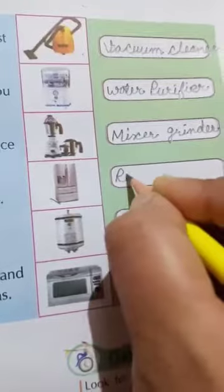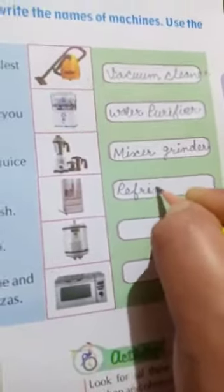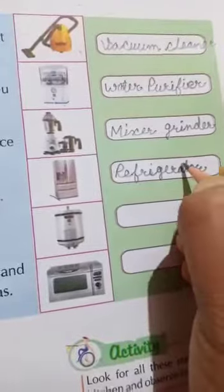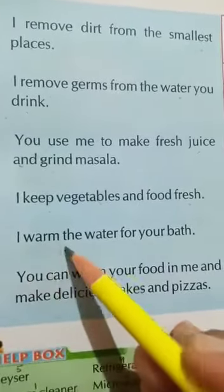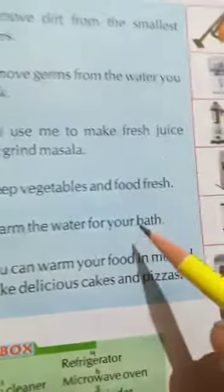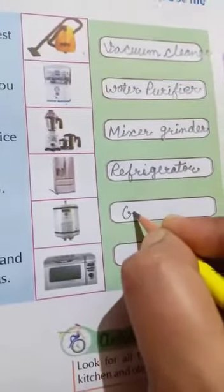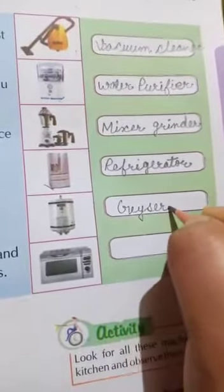You will write here: R-E-F-R-I-G-E-R-A-T-O-R. Refrigerator. Now come to the next point. Number 5: I warm the water for your bath. Which picture is this? This is geyser. G-E-Y-S-E-R. Geyser.